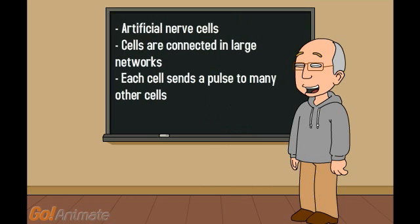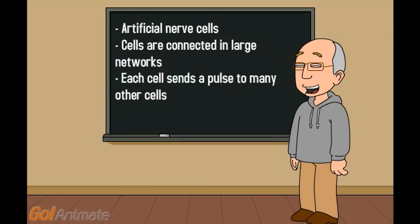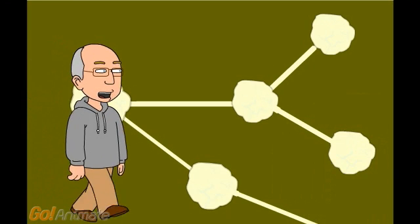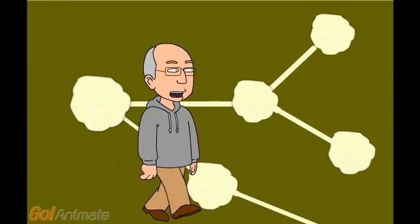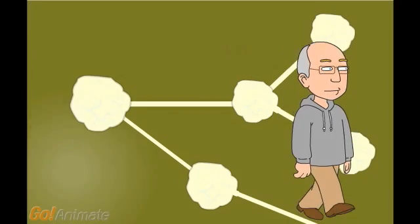Neural Networks are models of the brain. They consist of artificial nerve cells. The cells are connected in large networks. Each cell sends a pulse to many other nerve cells. When a nerve cell fires, it sends a pulse to all connected cells.